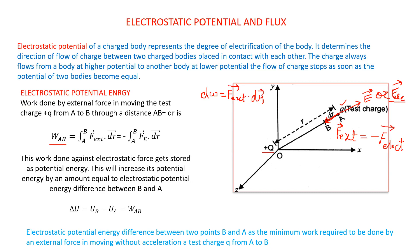This is the small work done for small displacement dr. The net work done from A to B is obtained by integrating dW from A to B. For small displacement dr, work done is F_external dot dr, and the total work done W equals the integration of dW from A to B. Since F_external is equal to negative of F_electric, work done W equals the integral of negative F_electric dot dr. This work done against the electrostatic force gets stored as potential energy.